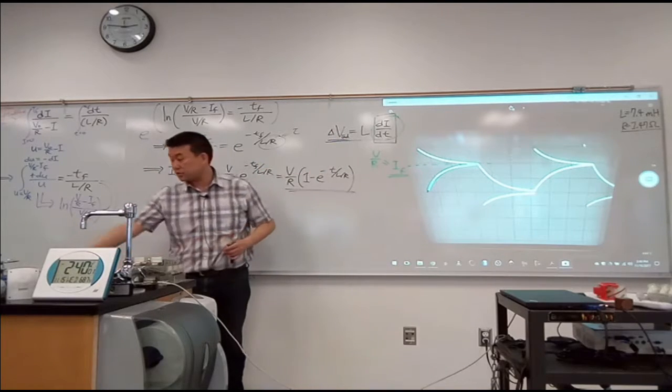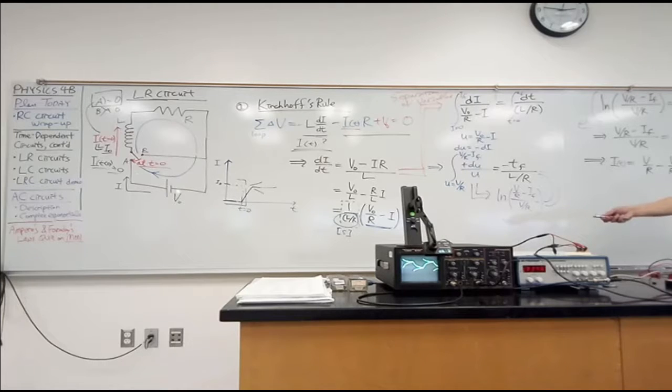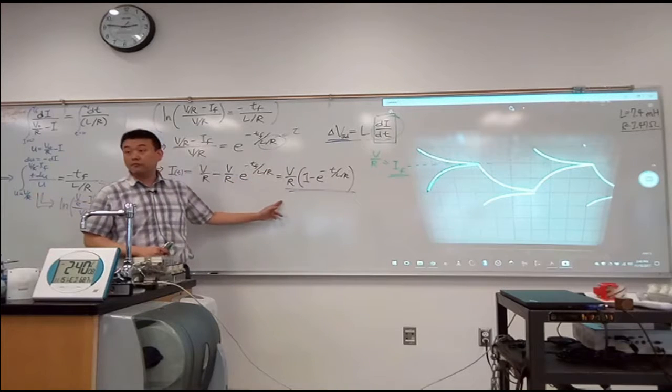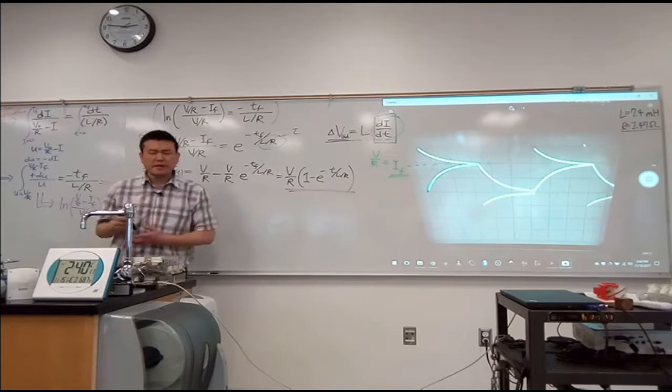So all of the battery's voltage now drops across the resistor. So that makes sense that this is the current that will be flowing once that happens.